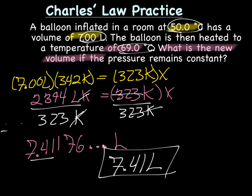Let's check quickly. Charles' Law says volume and temperature are directly proportional, so if one goes up, the other goes up. We went from 50 degrees Celsius to 69 degrees Celsius, so temperature increased, which means volume should also increase. I started with 7 liters and ended at 7.41 liters — so we probably did it right.